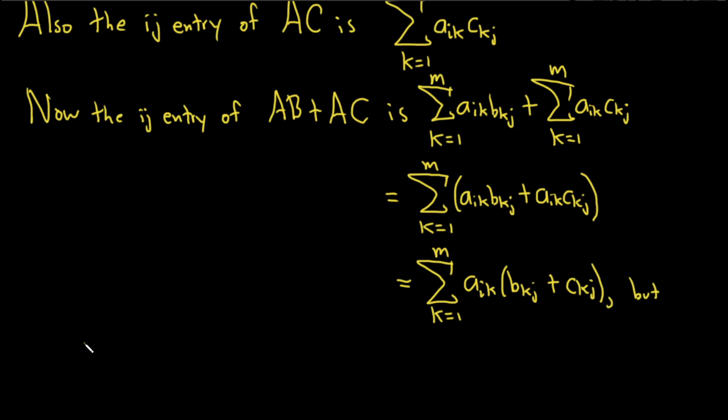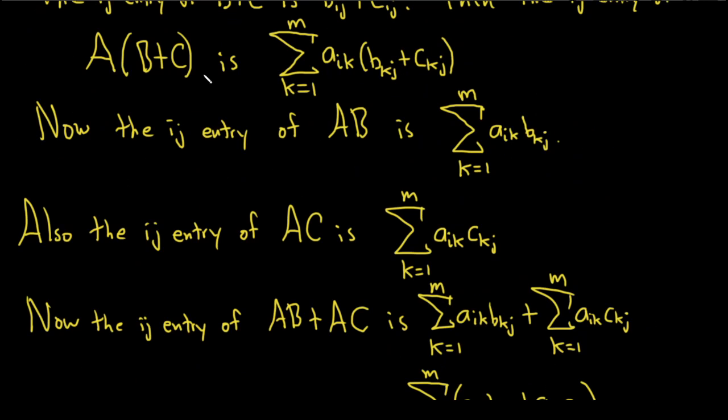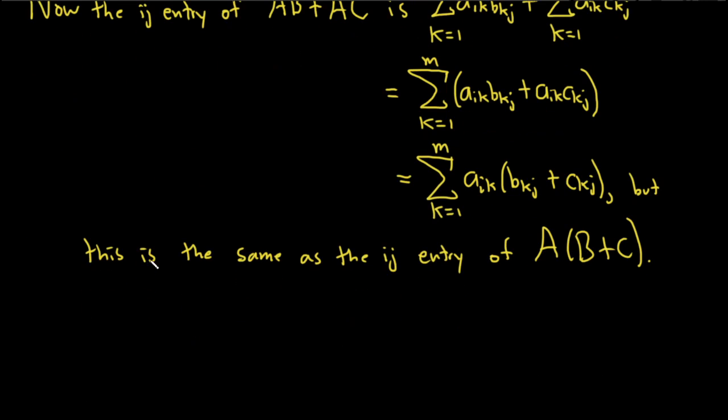But this is the same as the ij entry of our original left-hand side, which was up here. It's the same thing. So A times (B + C) gives us that ij entry. So now we can finish.